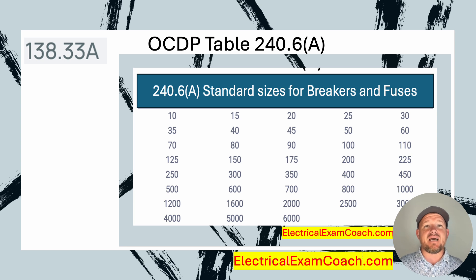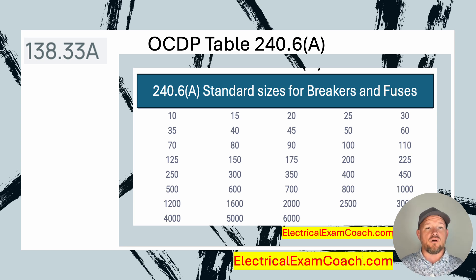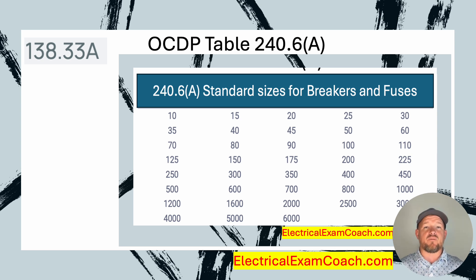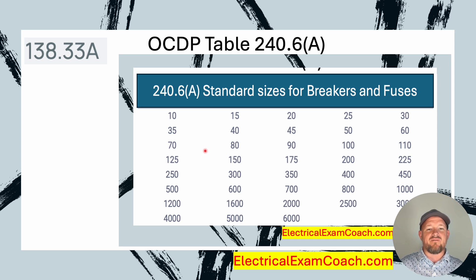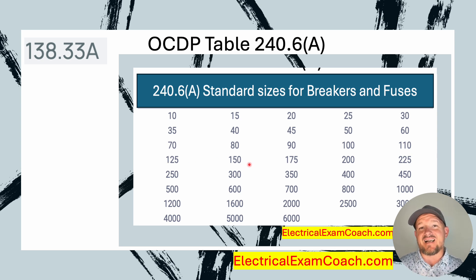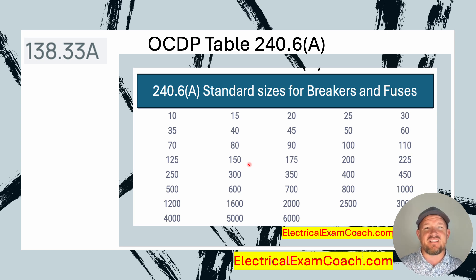Now that we have 138 amps, we head over to Table 240.6A. We take our known load of 138 amps and we're allowed to choose the next size up standard breaker in this scenario. Going through the table: 125 is not big enough. We fall somewhere between 125 and 150, but the code allows us to choose the next size up, which in this case is 150 amps.